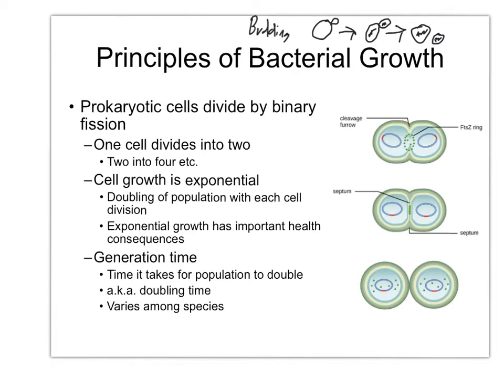In prokaryotic cell division, or at least in bacterial cell division, usually the cell will become larger, and then its genome will replicate. The genome has to replicate first, and the two genomes will separate to opposite poles of the cell. Then a ring of proteins that acts kind of like a belt, called the FTSZ ring, forms. It's called the FTSZ ring because it's made out of the protein FTSZ.